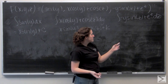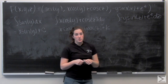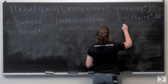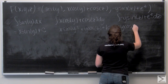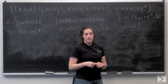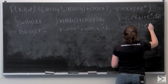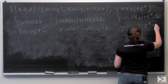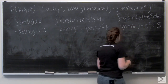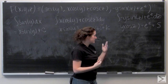Now let's do the third integral. The integral of negative y sine z with respect to z is going to be y cosine of z. And the integral of e to the z dz is going to be e to the z. Plus another arbitrary real number s.